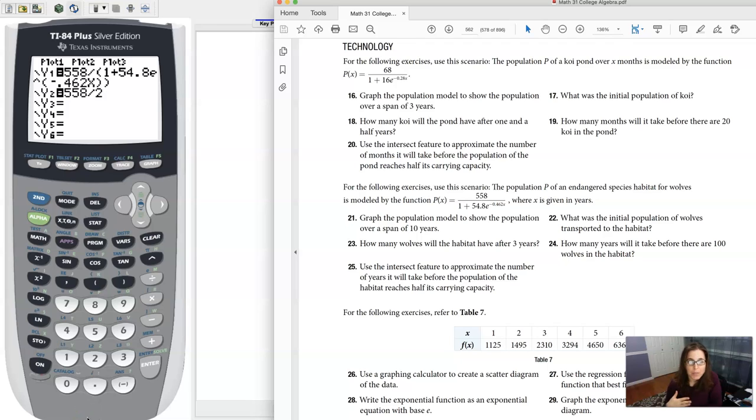Hey Math 31, I had a question coming out of section 6.8, number 25. This is where we were asked to use the intersection feature on our calculator to find the number of years it would take before the population of this endangered species of wolves reaches half of its carrying capacity.